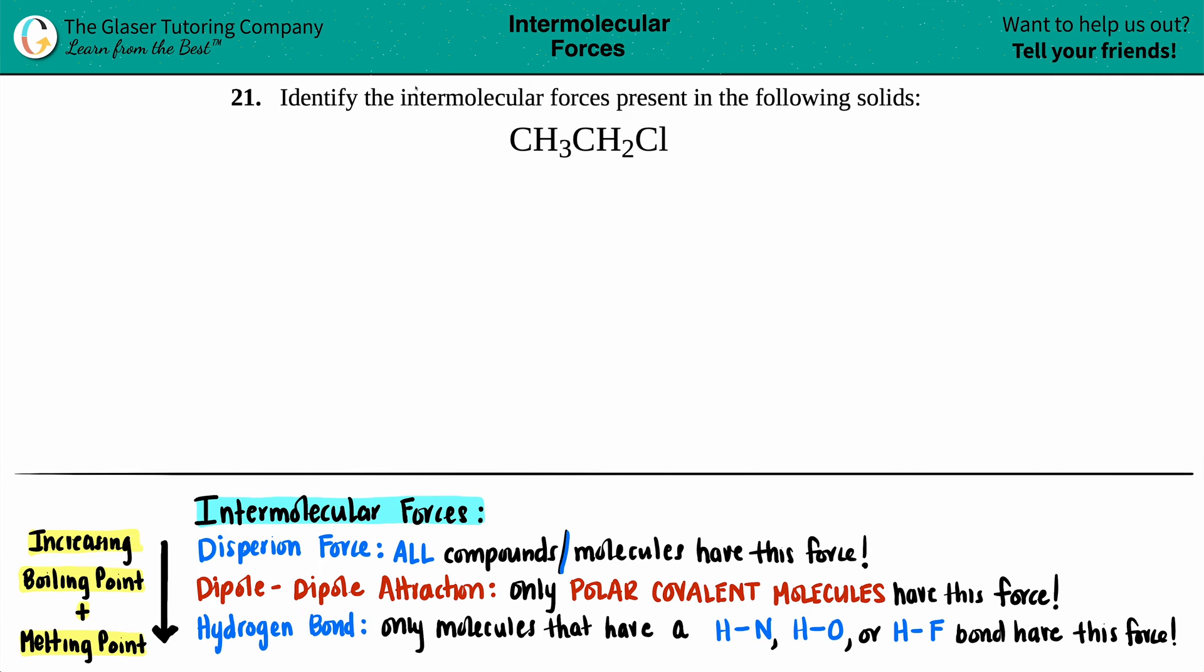Number 21: identify the intermolecular forces present in the following solids, and then we have CH3CH2Cl. So in order to find intermolecular forces, the easiest way to go about this is to draw the Lewis structure.